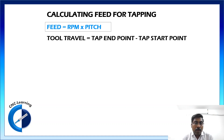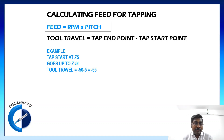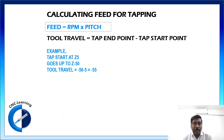Now let us see what the total tool travel would be. You can calculate it as the difference between the tap end point and tap start point. For example, the tap starts at Z5 and goes to a depth of Z-50. So tool travel is -50 minus 5 = -55, which means the absolute value is 55 mm — that is, 50 mm depth plus 5 mm clearance.